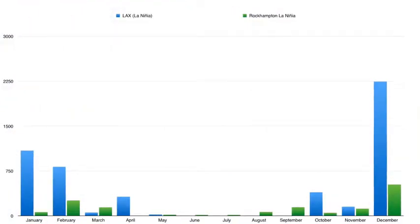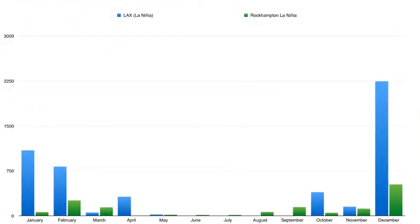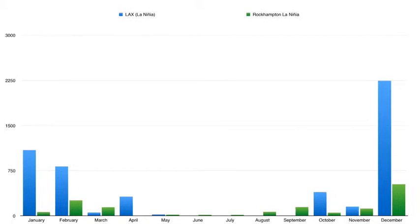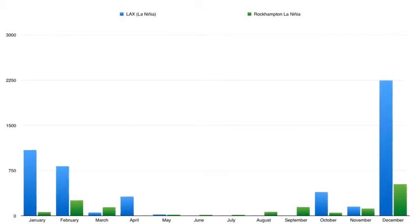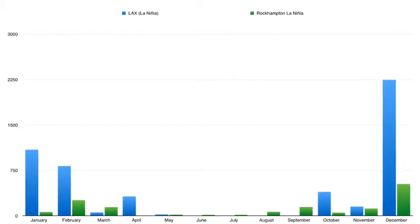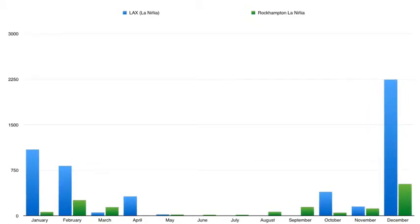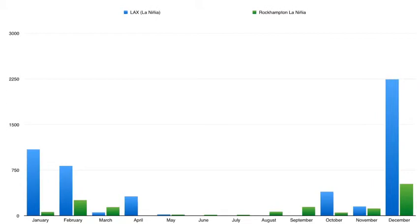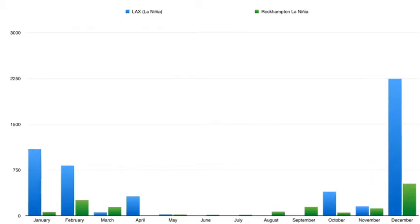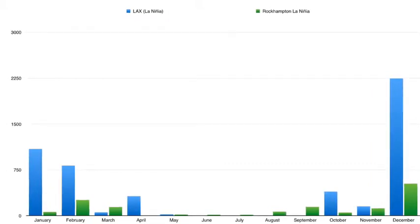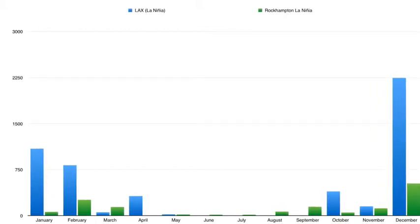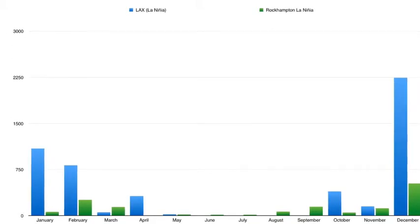This is a graph of La Niña. Again, LAX is in blue and Rockhampton is in green. As you can see, LAX had way less rain during La Niña, and so did Rockhampton. Rockhampton got up there later on and got a little bit more precipitation. LAX in December had a lot of precipitation, while in January and February they didn't have a lot, and in March they had hardly any. In June through the beginning of summer to end of summer, they had a lot too.